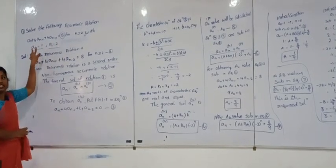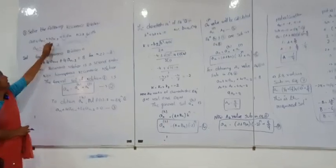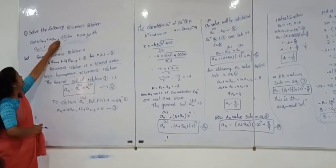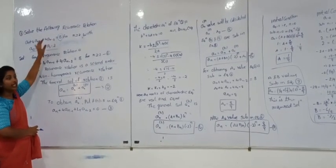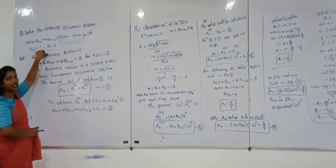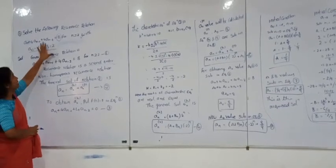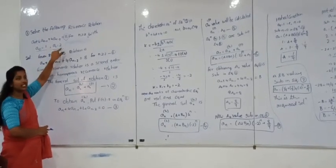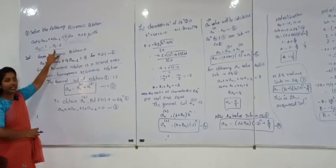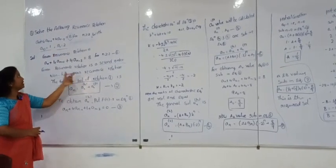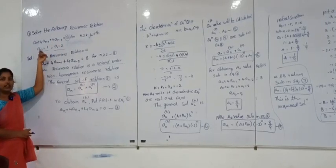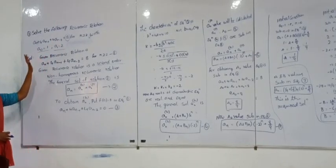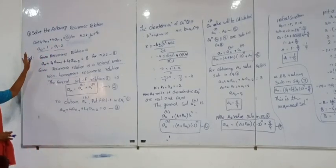Second point: check how many terms are given — single initial condition or double initial condition. Two initial conditions means it is a second order recurrence relation. Only a single initial condition means it is a first order recurrence relation. These are the main points.